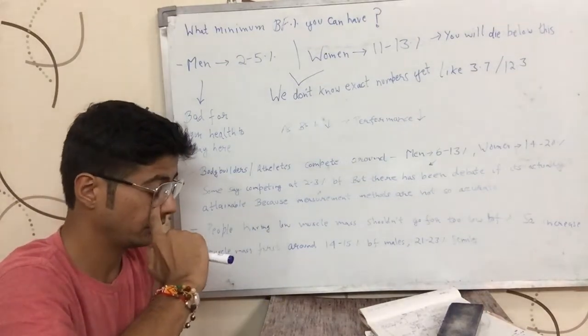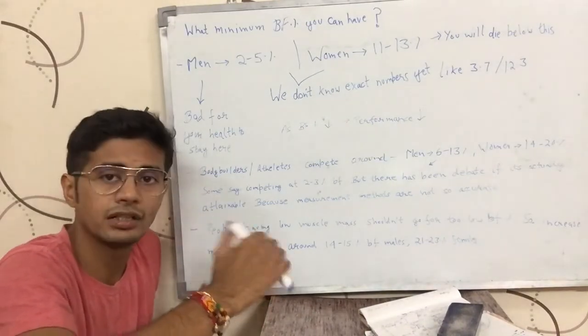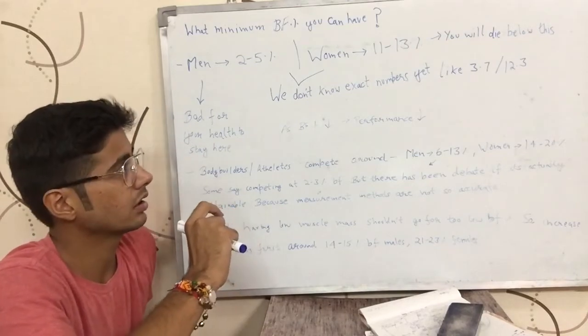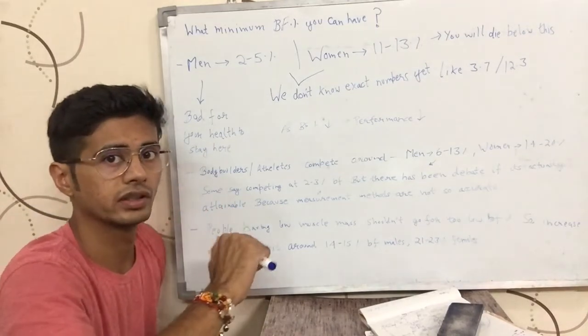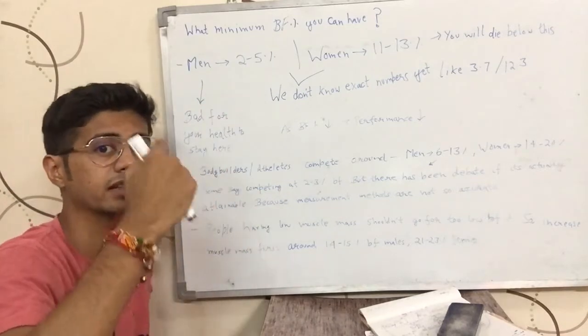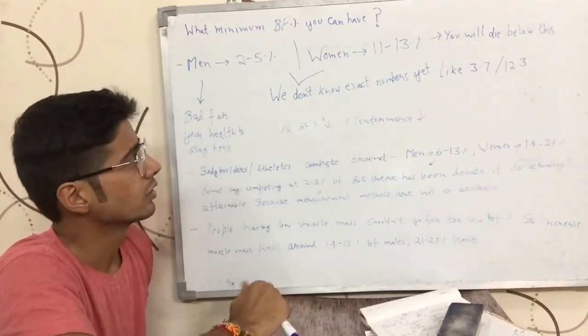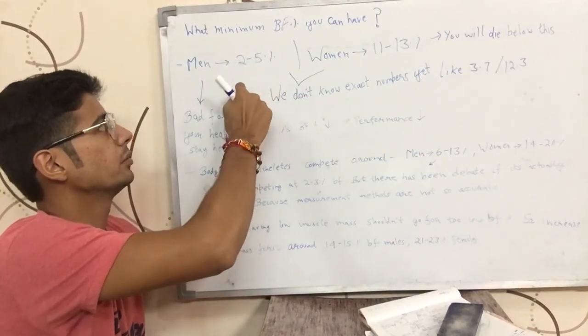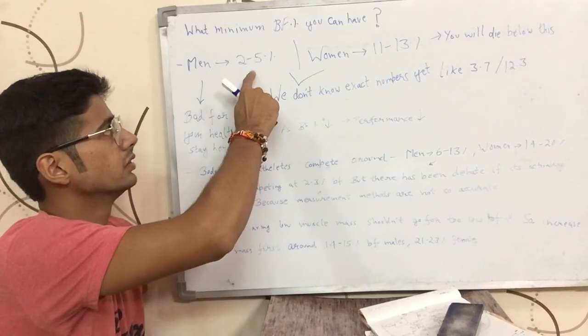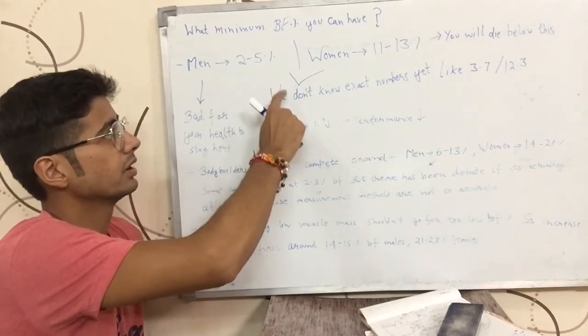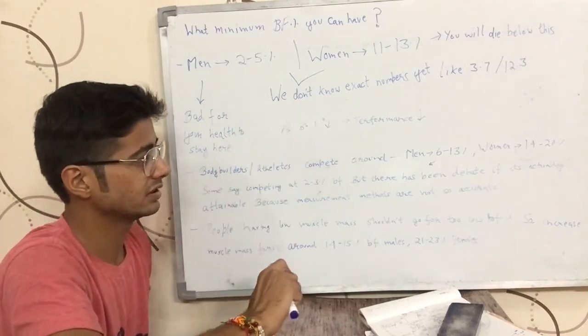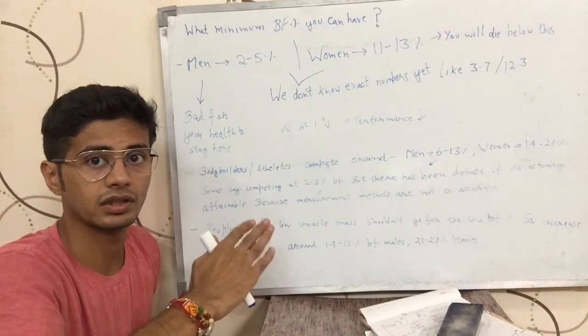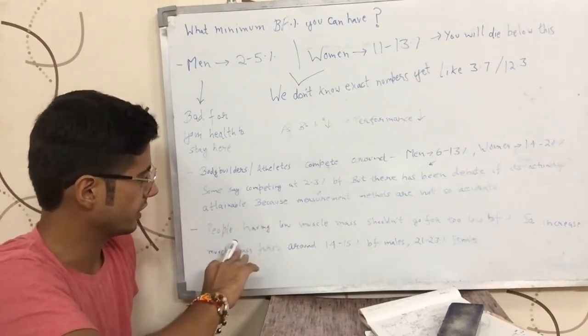And we have not been so clear because the measurement methods used to measure the body fat percentage are not so accurate that they would tell us the body fat percentage of the person is like 3.7. Basically, we don't know the exact number below which a human being is going to die, male or female. And we don't know the exact number below which the body fat percentage is not attainable. I wanted to clarify this thing.